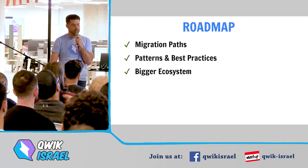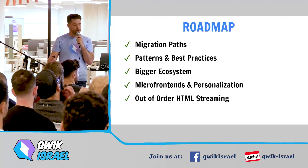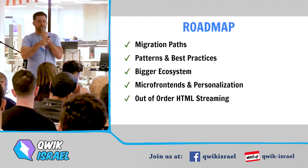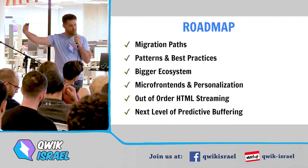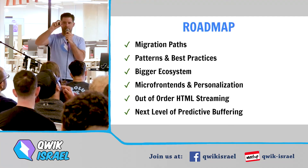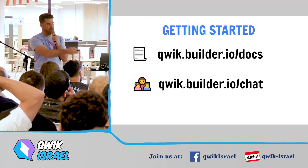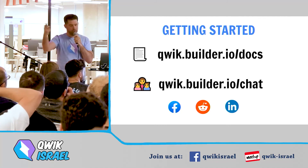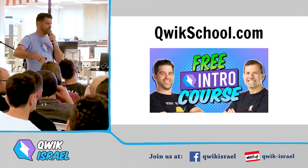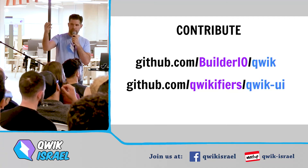What's next on the roadmap: migration path patterns and best practices, a bigger ecosystem, solutions for micro-frontends and personalization, out-of-order HTML streaming, and next-level predictive buffering that could collect usage statistics and bundle chunks optimized for specific users. To get started: check the docs, join the Discord, find the community on Facebook, Reddit, and LinkedIn. Visit QuickSchool.com to learn how to use it, or contribute via the official GitHub repo.